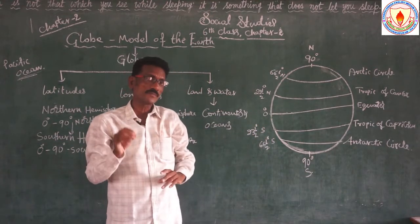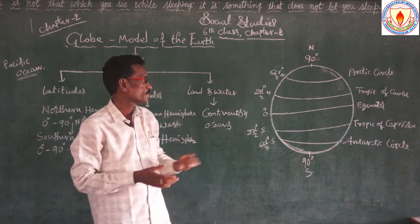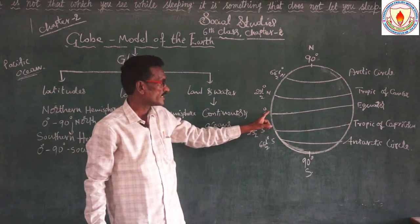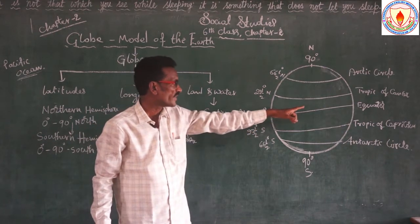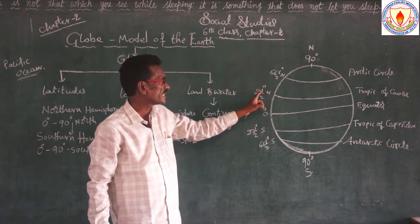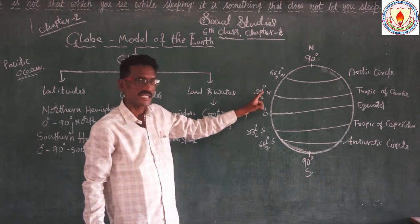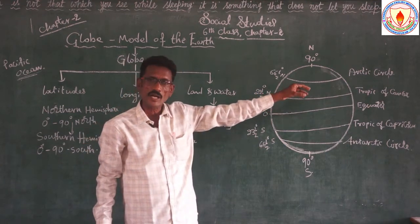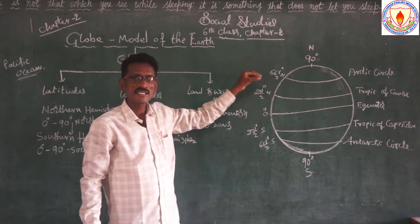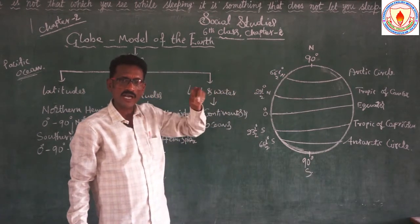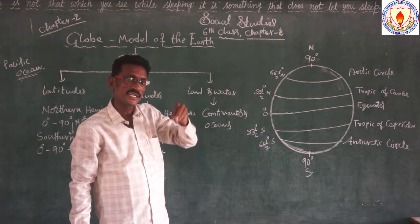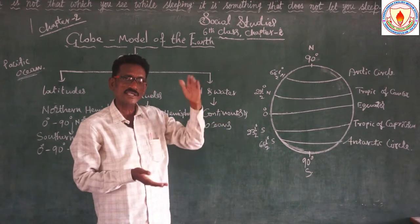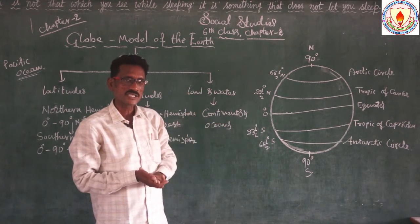The important latitudes: zero degrees latitude is called the equator. 23 degrees north latitude is called the Tropic of Cancer. It also passes through India — the middle of India. So India is also divided by the Tropic of Cancer into North India and South India.